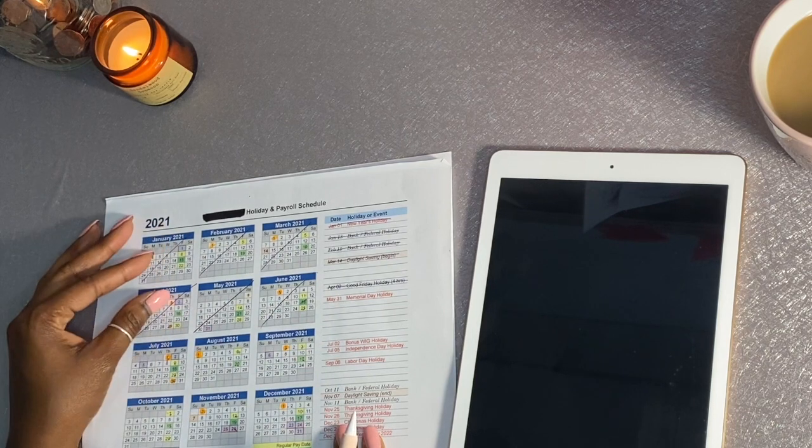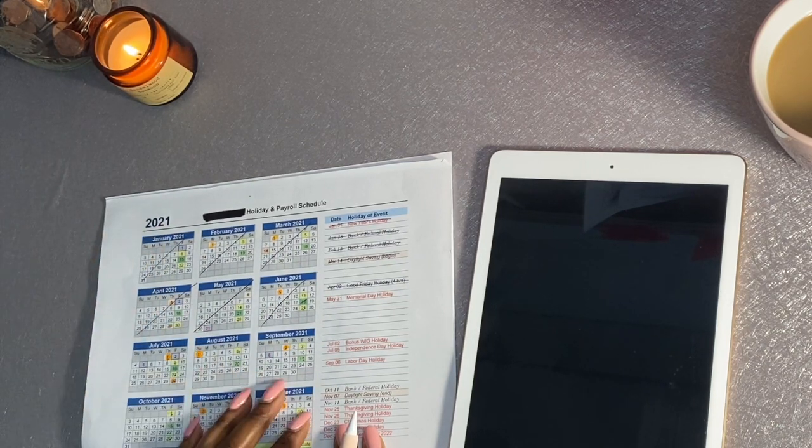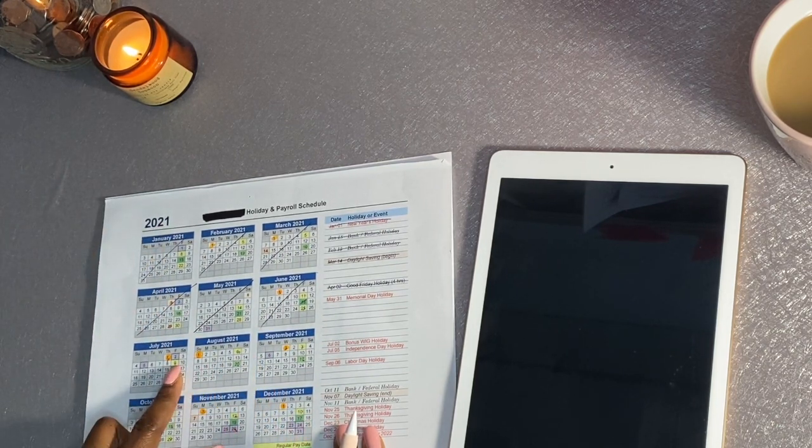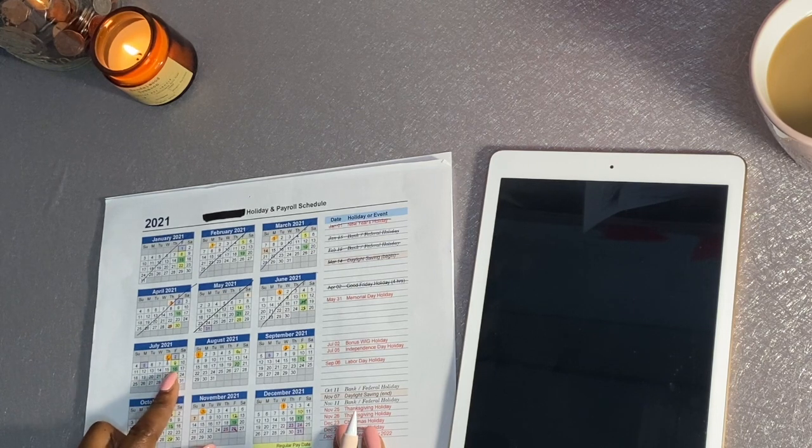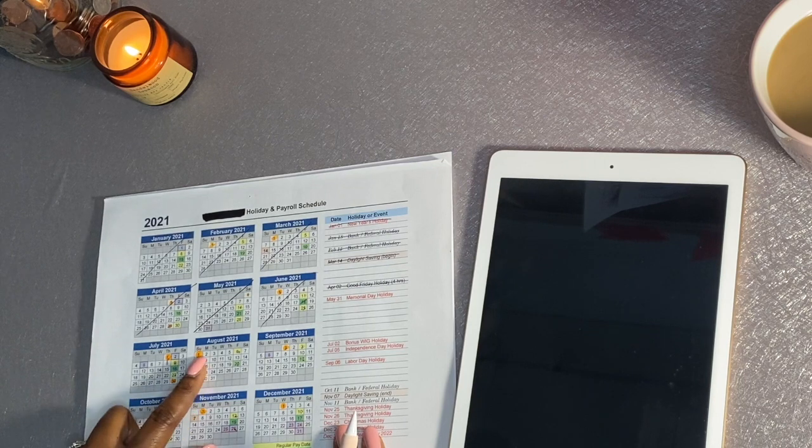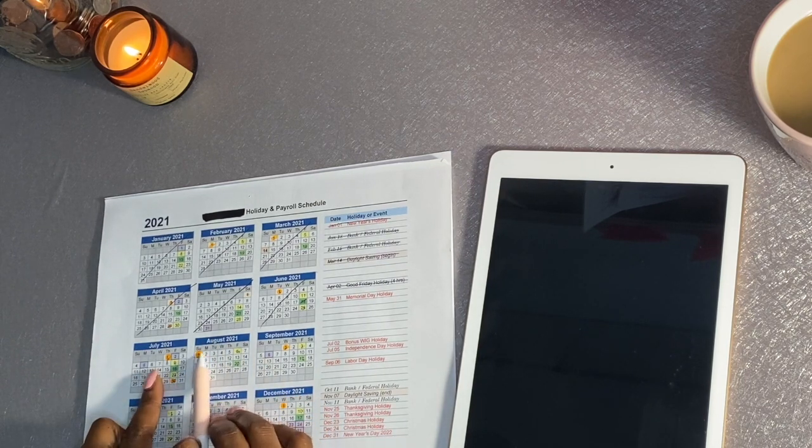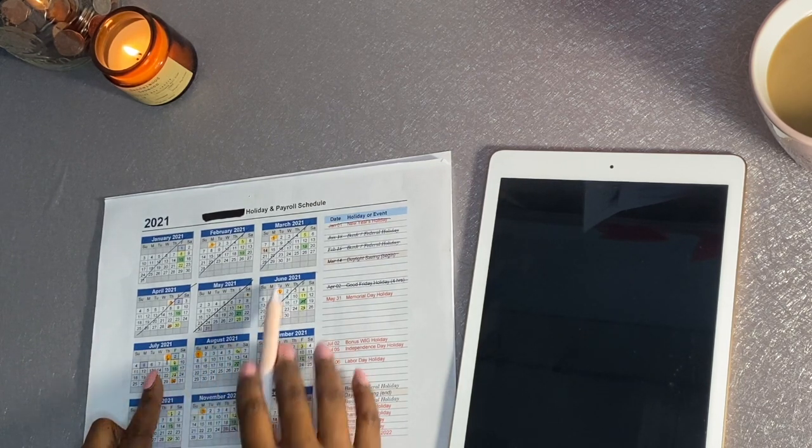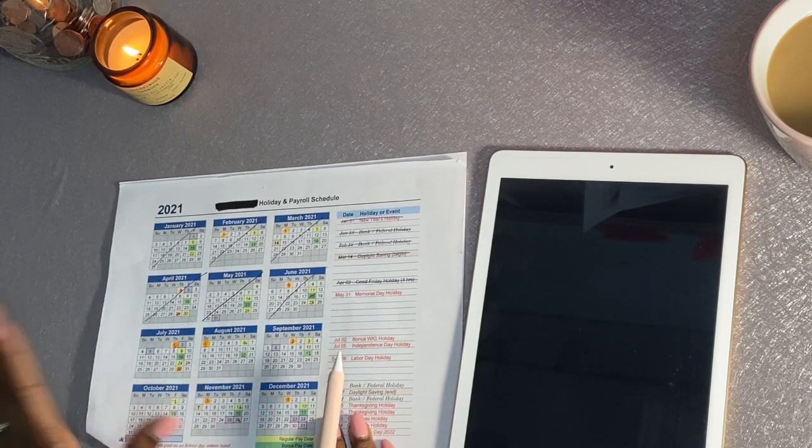So what I have here is my payday calendar. Every payday is highlighted in yellow and every bonus check that I get is highlighted in green. The orange is my VA money. The first of the month I get paid my VA disability money at the beginning of each month.